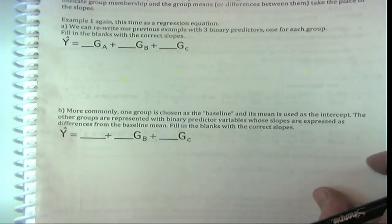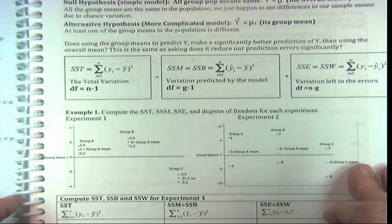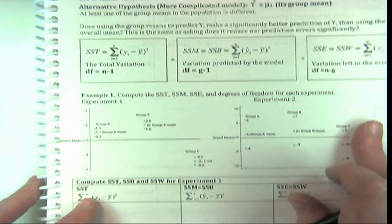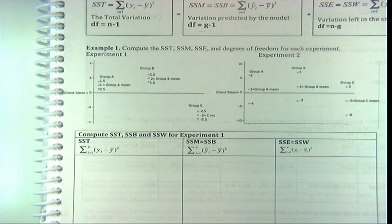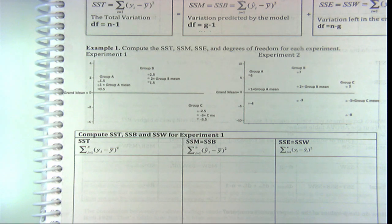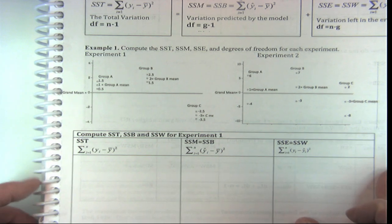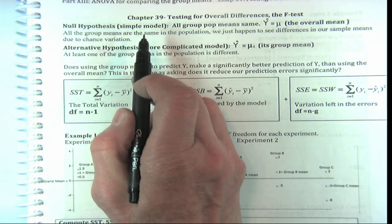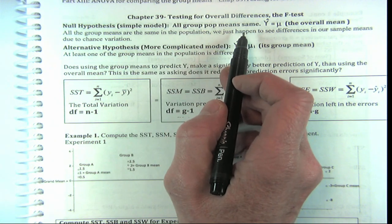That's another way to think about why the F statistic would be one when the null is true — what group you're in is just governed by the same laws of chance as the spread within the groups. So let's continue with that example and work out how to compute the F statistic. The null hypothesis for comparing group means is that all group means in the population are the same — that's why we use mu.